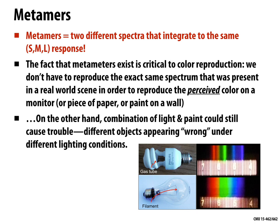Metamers are two different spectra — two different incident illuminations — that integrate to the same physical response in the eyeball. The fact that metamers exist, that different spectra can be perceived by a human as the same color, is critical to color reproduction. It would be super annoying if this weren't true — if I had to reproduce a spectrum exactly, I'd need a super precise printer that could print inks of all different frequencies. The fact that the eyeball is a crude measurement device when it comes to color is actually helpful: it means we can cheat and find mixtures of inks that produce the same perceived color without producing the same spectrum.